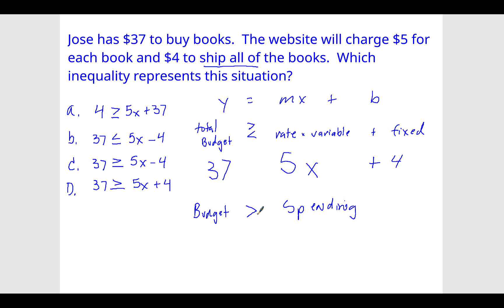Then you have to ask yourself, can he spend equal to? And of course, all of the options are equal to. But this is what we want. We want 37 is greater than or equal to 5x plus 4, which it looks like D is our answer.